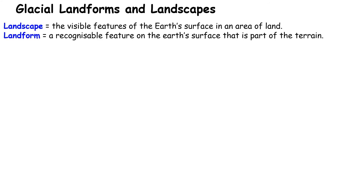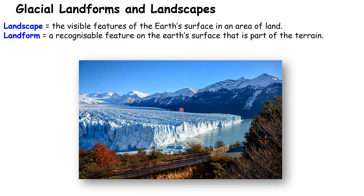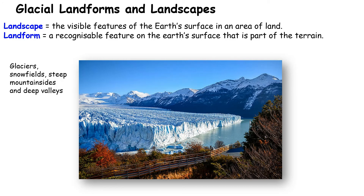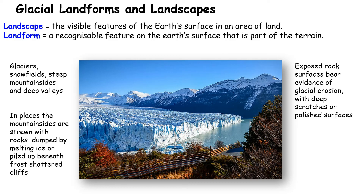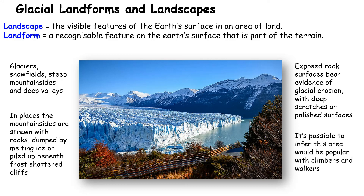Finally, let's have a quick look at landforms and landscapes. In glacial areas, you get a variety of different landforms. A landform is a recognisable feature that we can see as part of the terrain, and the landscape is all of the visible features on the Earth's surface in an area of land. Describing a glacial landscape, you would see glaciers, snowfields, steep mountainsides and deep valleys, and all the landforms of glaciation. In places, the mountainsides are strewn with rocks dumped by melting ice, or piled up beneath frost-shattered cliffs — with exposed rock surfaces showing evidence of glacial erosion: deep scratches or polished surfaces. Such an area would likely be popular with climbers and walkers.